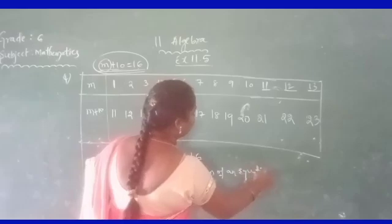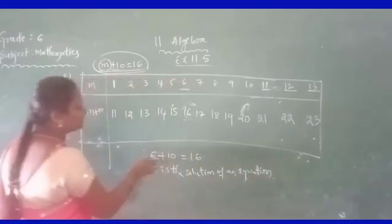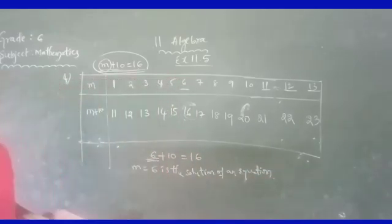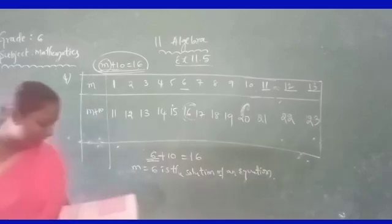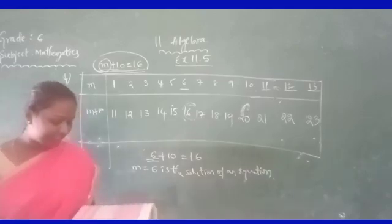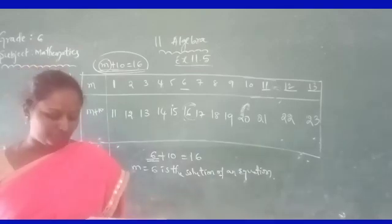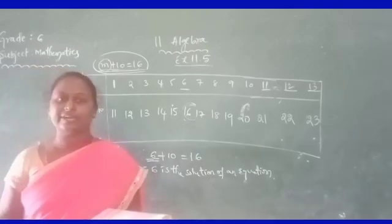Which variable satisfies the equation? The value 6. Similarly, complete the table and by inspection find the solution of the equation 5T is equal to 35.